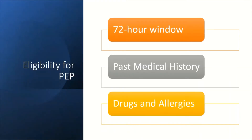When deciding whether to offer HIV PEP, we need to first decide whether the person is eligible for PEP. PEP must be offered in the 72-hour window of opportunity, so we must document, to the best of the patient's knowledge, the time or timeframe of the exposure — whether that is a needle stick exposure, a sexual exposure such as unprotected sexual intercourse, or a sexual assault.